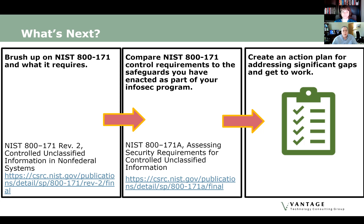Comparing the control requirements listed in NIST 800-171 to the safeguards and controls you have enacted as part of your program is a good next step, and NIST has even provided an assessment rubric to help you do this. The controls themselves were derived from NIST 800-53 to protect controlled unclassified information. NIST 800-171 has 14 families of security requirements and 110 separate controls. You may find that many of these are completely covered by your information security program, regardless of which framework you follow.